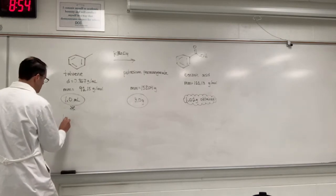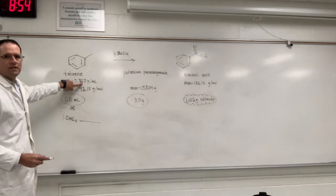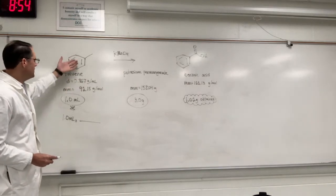So 1.0 milliliters is going to be converted to grams using the density because it's a liquid substance.